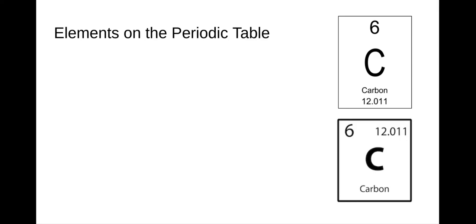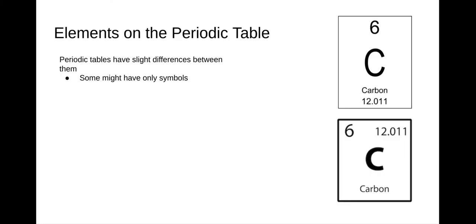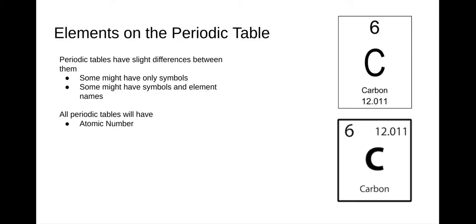Let's take a look at what elements look like from the periodic table. I have two examples of carbon, and every periodic table looks just a little bit different or might be arranged a little bit differently. Some might only give you symbols, some might give you symbols and also the element name. But all periodic tables will have what's called an atomic number and an atomic mass — they just might be in different placements or locations within the element.